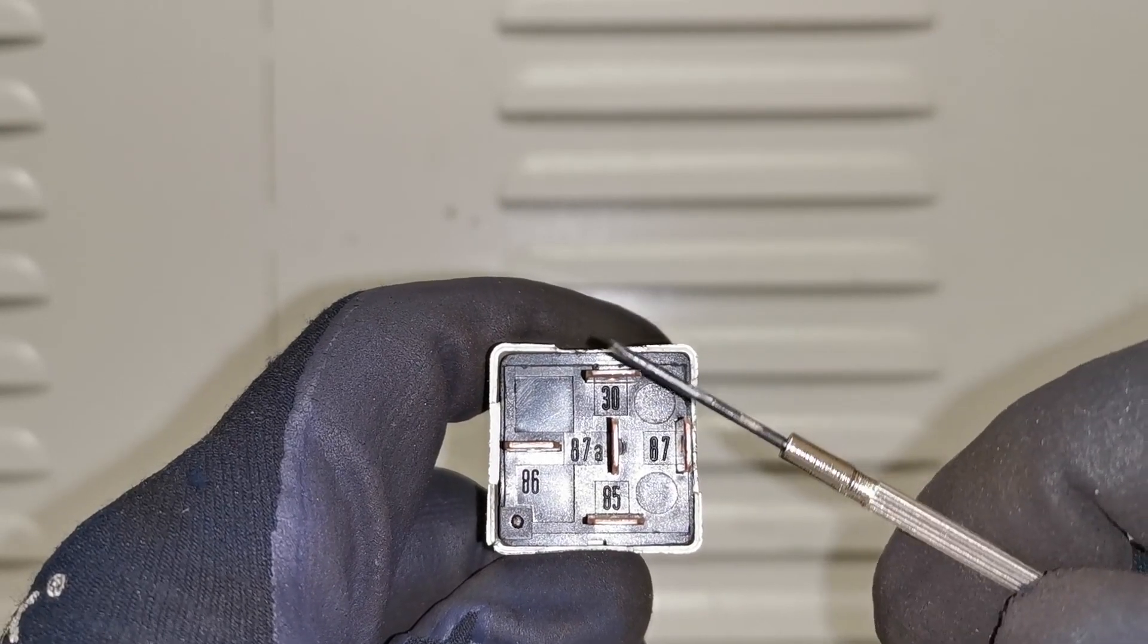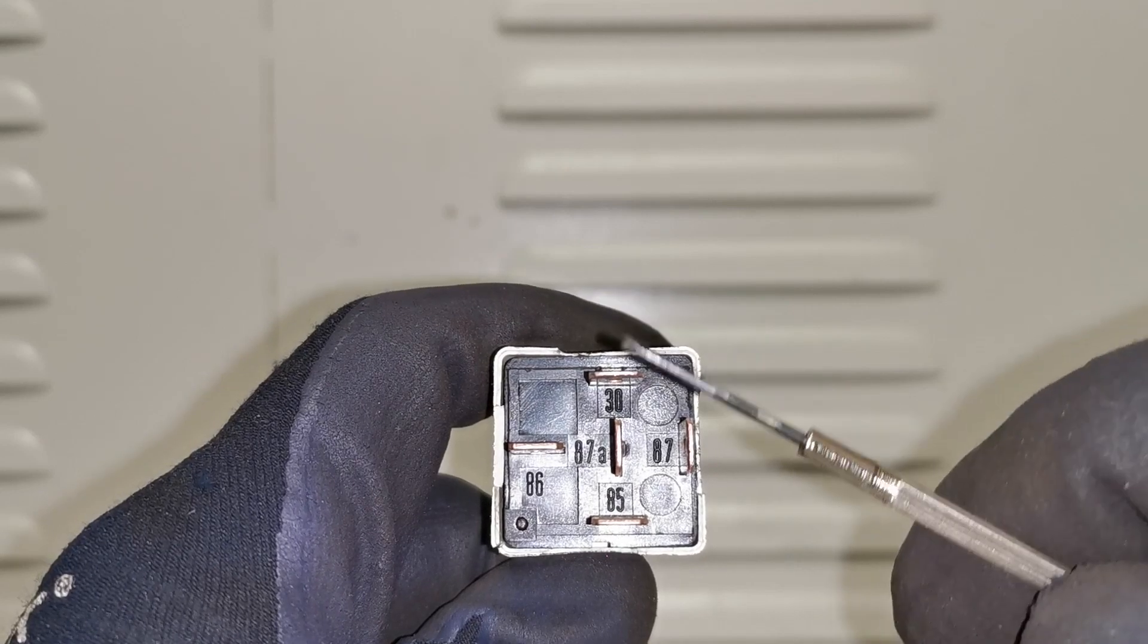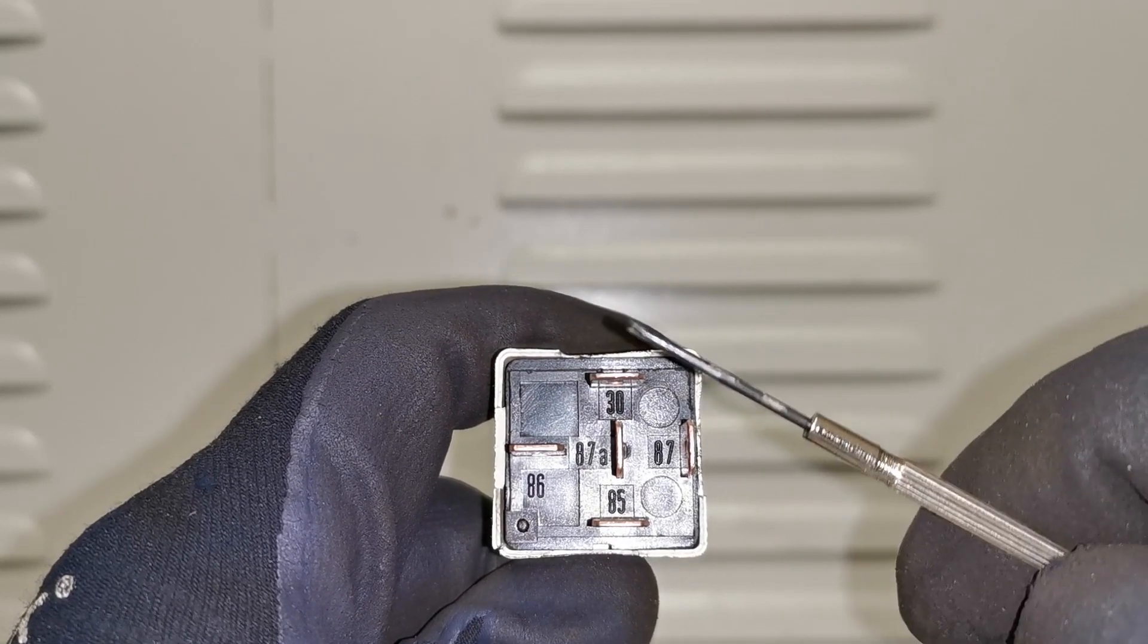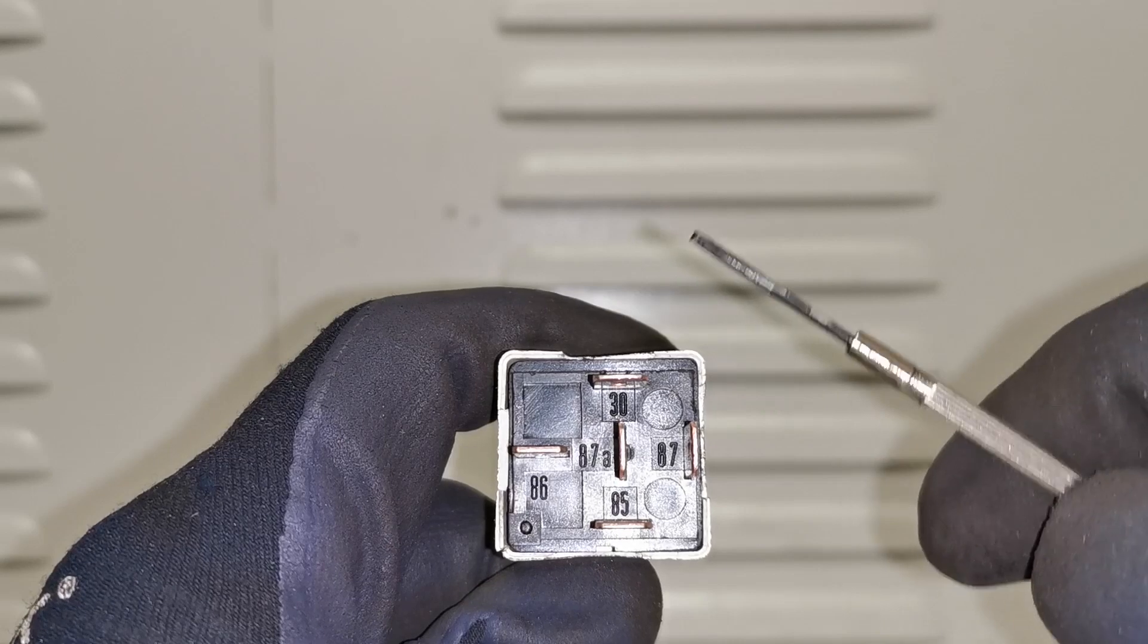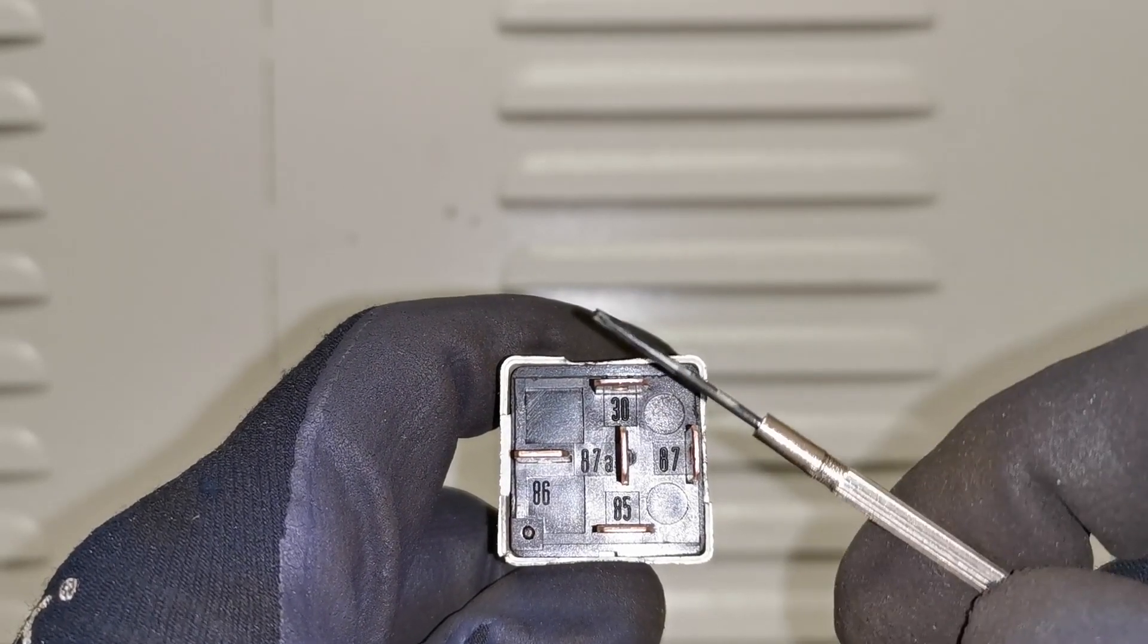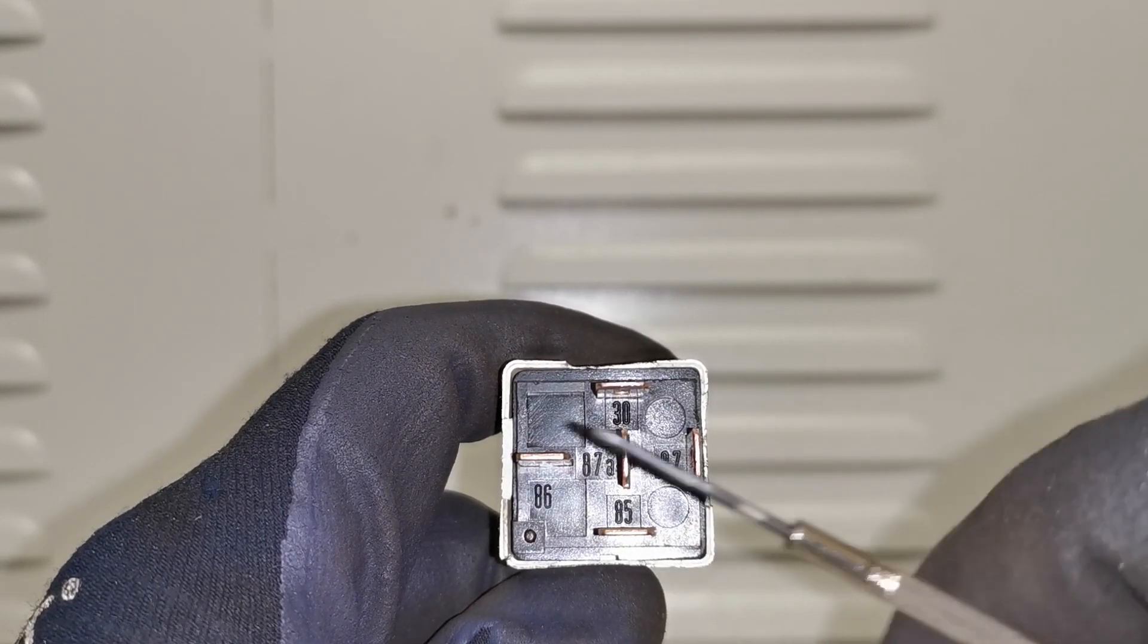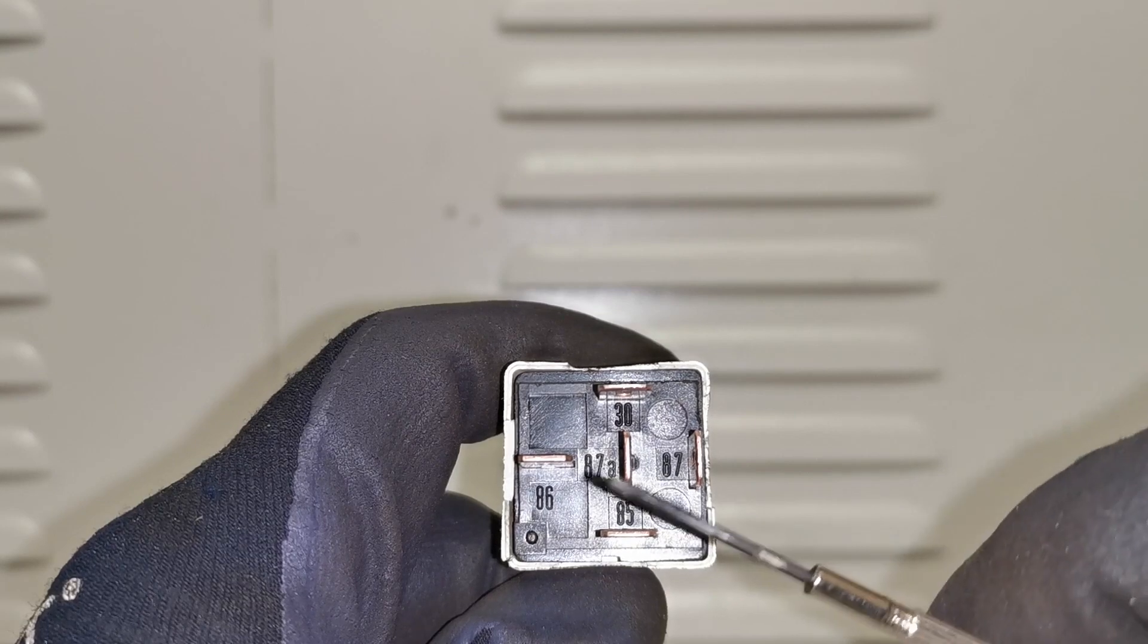When this is in the vehicle number 30 usually is a constant voltage to whatever the relay is supplying be it lights or a starter motor. This then joins up with 87 which completes the output side of the relay when the power has been applied.